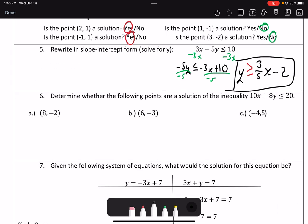Now, number 6 says determine whether the following points are solutions to the inequality 10x plus 8y is less than or equal to 20. Easiest way to do this is to just substitute these values in for x and y. So I'm going to have 10 times 8, because that's my x value, plus 8 times negative 2 is less than or equal to 20. If I put that in my calculator, I've got 10 times 8 plus 8 times negative 2. That's going to give me 64. Is 64 less than or equal to 20? That is not true, so it's not a solution.